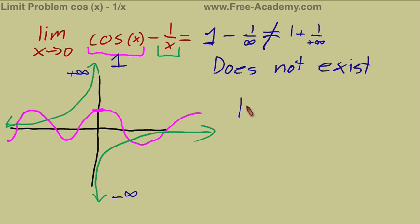We can take a look at this another way. You can take the limit as x approaches infinity, or you can do negative infinity, of cosine of x minus 1 over x. What will that equal?